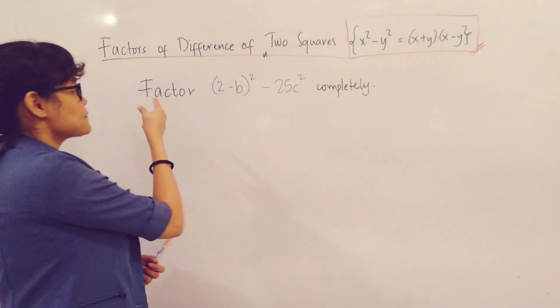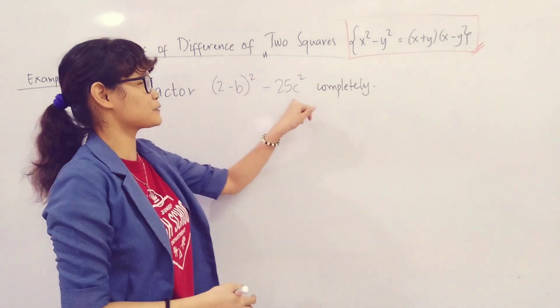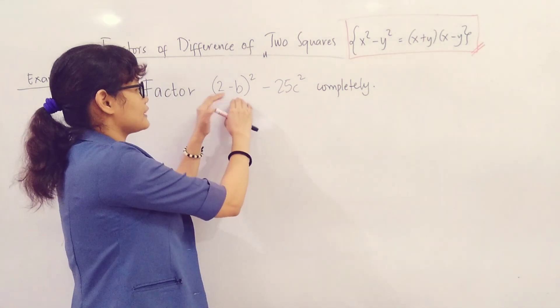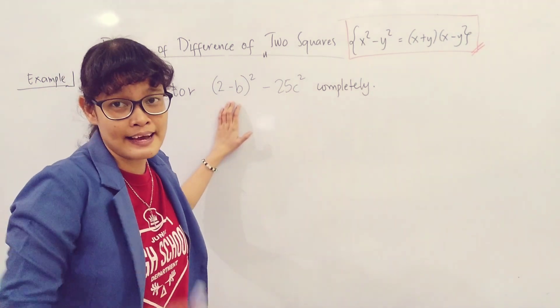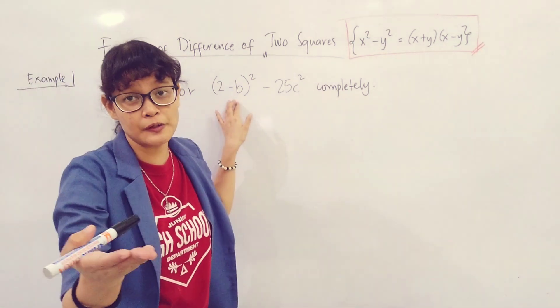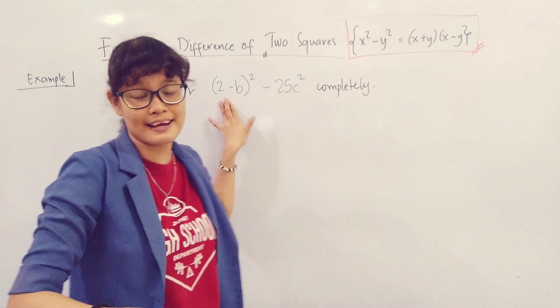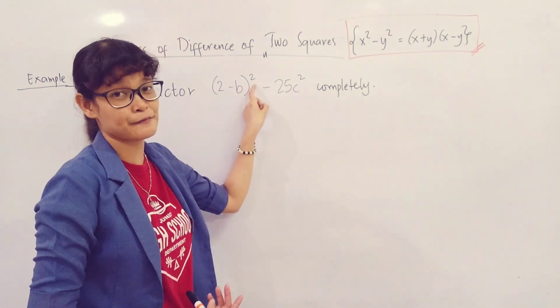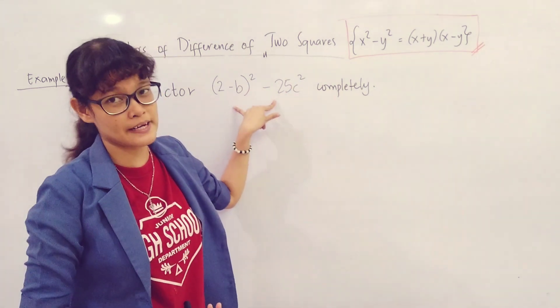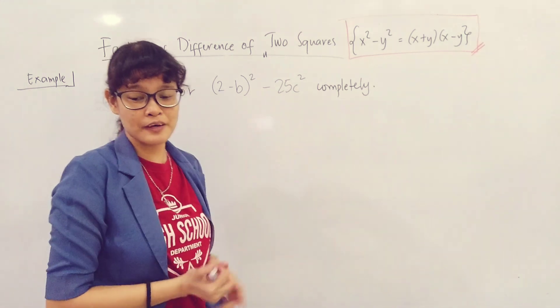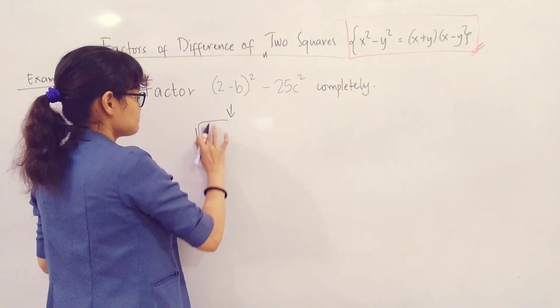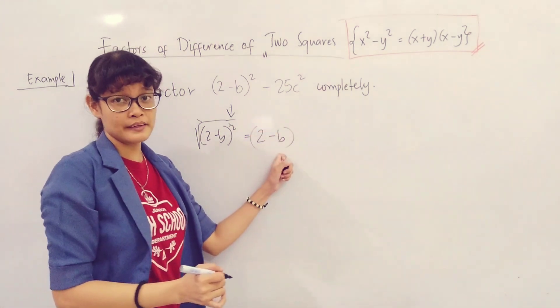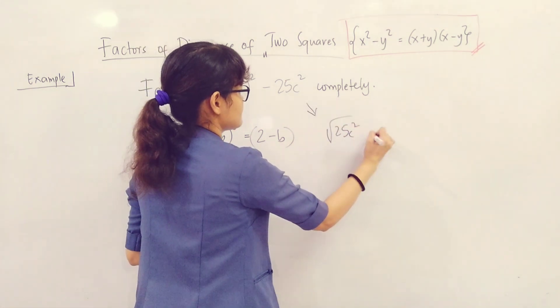For our last example, we have factor the quantity 2 minus B squared minus 25C squared completely. Do not expand this anymore. You can take this one - you have 2 minus B, but it's inside parentheses, meaning you can take it as one unit inside. You have an option - you can either assign a variable that is equivalent to this one, or you can directly extract the square root. Because if you look closely, its exponent is 2. So that means this whole expression right here is a perfect square. When you have quantity squared minus, it's like a binomial. We can now proceed to the first step, extracting the square root.